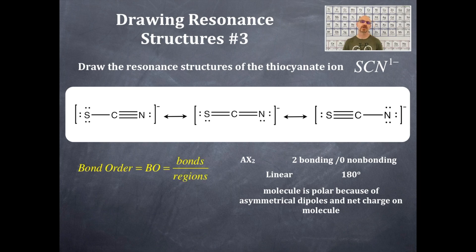The next thing that we're going to do is we're going to get the bond order for this molecule here. Actually, this is an ion. The number of bonds and the number of regions. We can look at any one of the three resonance structures to determine the bond order.